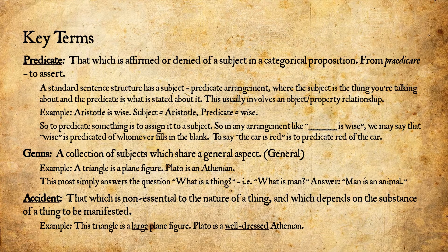You can ask 'what is a man?' — the answer is that man is an animal; he belongs to the genus 'animal.' Keep in mind that in philosophy, genus has a slightly different meaning than in biology. In taxonomy, genus occupies a specific place in the hierarchy between species and family. In philosophy, genus can be any category of things that share a general aspect, anywhere on such a hierarchy.